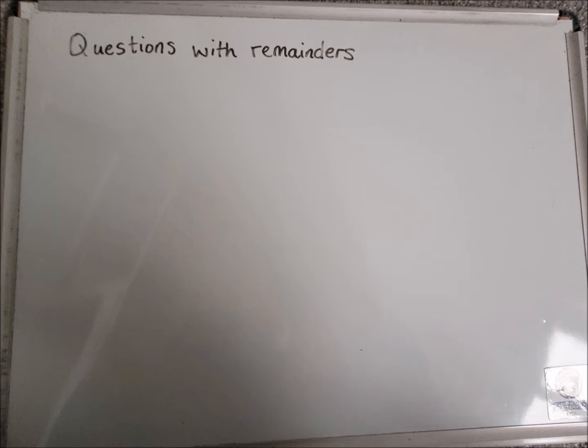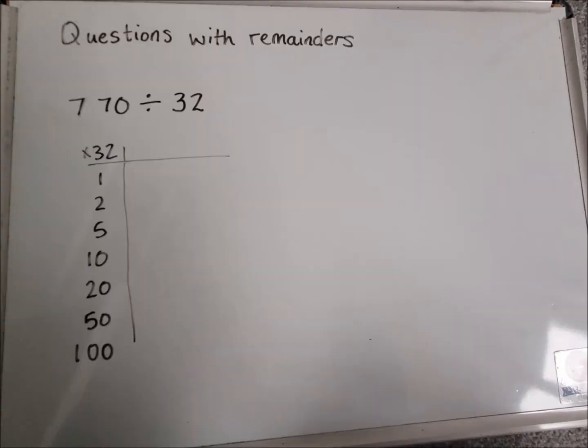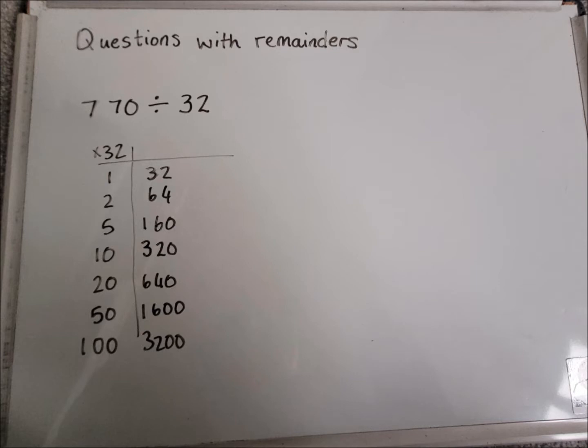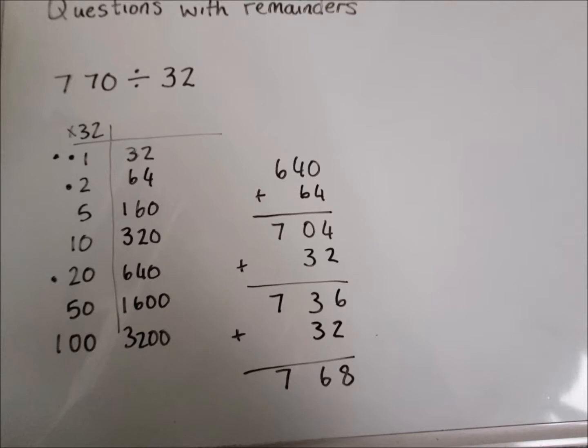So this example, I'm going to have 770 divided by 32. Same way, we're going to do a coin card for 32 first of all. So if you want to pause the video here and do it yourself, you can do. If not, the answers are on the board just now, so you can double check that you got them correct. Similar, I'm just going to try and make that target of 770. So I'm going to add up 640, add 64, add on 32, add on 32.